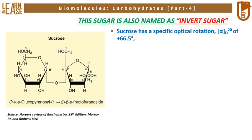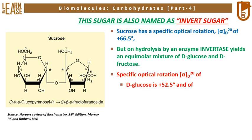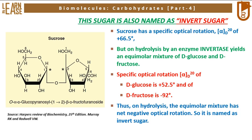Sucrose has a specific optical rotation of +66.5°. But on hydrolysis by the enzyme invertase, it yields an equimolar mixture of D-glucose and D-fructose. The specific optical rotation of D-glucose is +52.5° and of D-fructose is −92°. Thus, on hydrolysis, the equimolar mixture has a net negative optical rotation, so it is named invert sugar. The enzyme invertase is also known as sucrase.